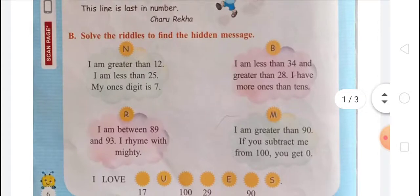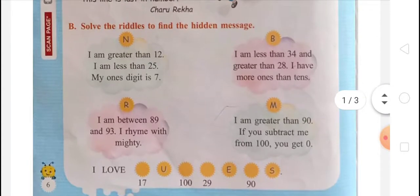Next question, that is given in your book: Solve the riddles to find a hidden message. Here is riddle N: I am greater than 12. I am less than 25. My ones digit is 7.